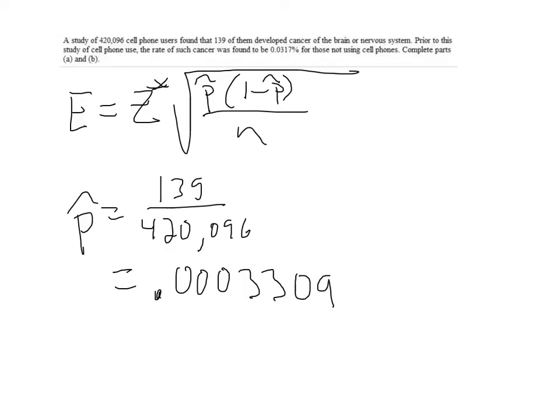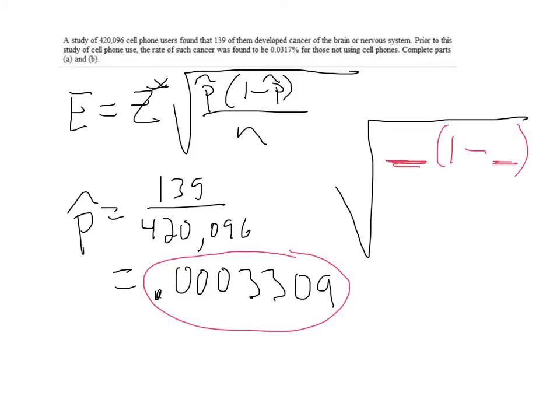And what I need to do is I need to calculate the standard deviation for this situation. So I'm not going to try to rewrite all those numbers. But what I need to do is take this value I just calculated, that's my p-hat. And then I'm going to do 1 minus that value. And I'm going to multiply those two products together. Hopefully you know how to use your store function in your calculator.